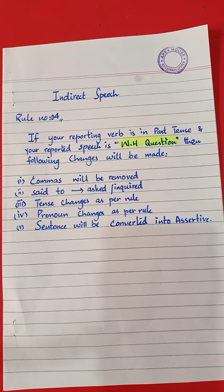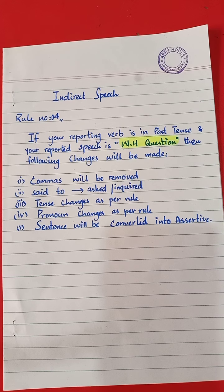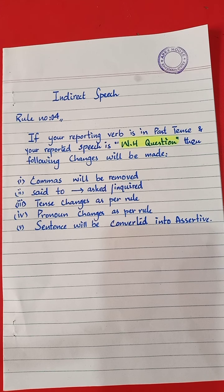Today we are going to learn rule number four of indirect speech. Rule number four is all about WH questions. In the last video I told you that there are two types of questions. The first one is a question which can be answered with yes or no — for example, 'Do you like bingo?' The second one is a question which cannot be answered only with yes or no but requires a detailed answer. Such questions usually start with WH words like what, why, how, when, etc. For example, 'What are you doing?'